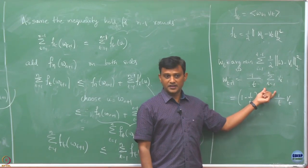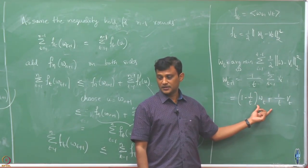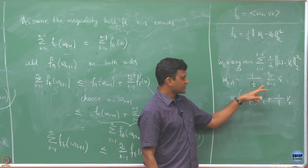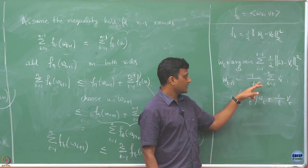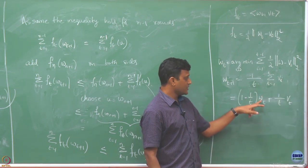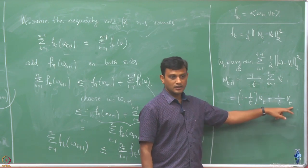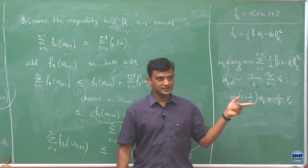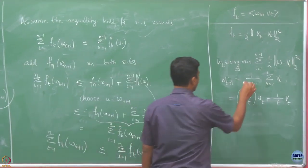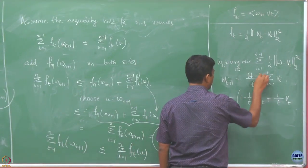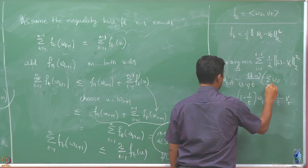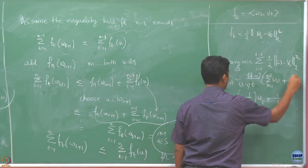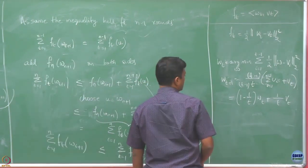You can rewrite W_{T+1} in terms of W_T. You can split the summation over T minus 1 terms — the average of the first T minus 1 terms is W_T and then the last term comes in separately. If you just add T minus 1 and split this, you end up with W_{T+1} expressed as a combination of W_T and V_T.